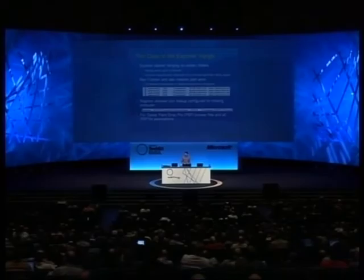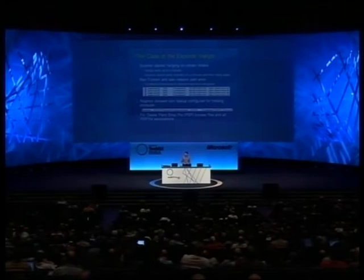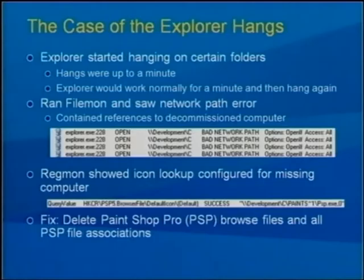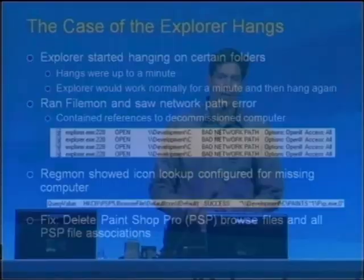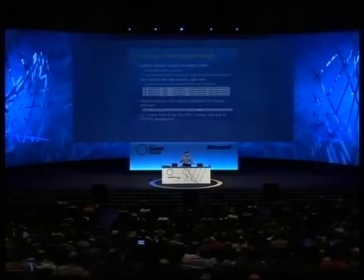Why was my machine referencing a decommissioned machine? I turned to Regmon and captured a trace. I searched the output for references to that machine and came across a query value in HKEY_CLASSES_ROOT for PSP5, browse, browser file, default icon — with a reference to PSP.exe on that other machine. It clicked: I was using a picture viewer called PaintShop Pro. I'd put the exe on one machine on my network and ran it from there. It had created an association for certain file types pointing back at that original executable to show thumbnails. When Explorer came across one of those directories, it tried to call that program to show the thumbnail — and hung.